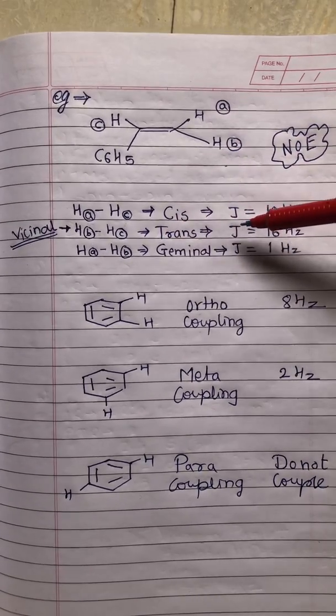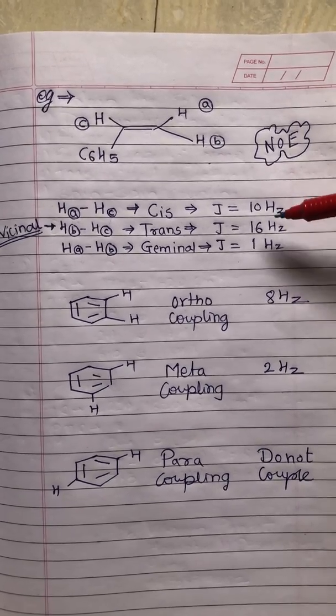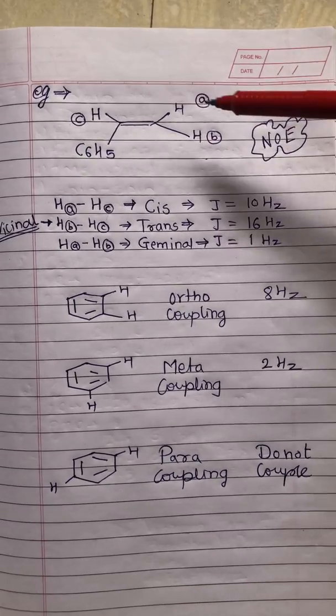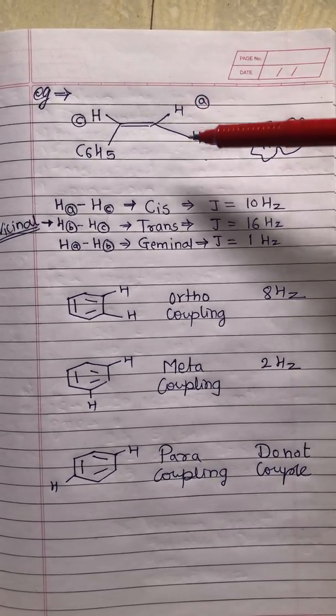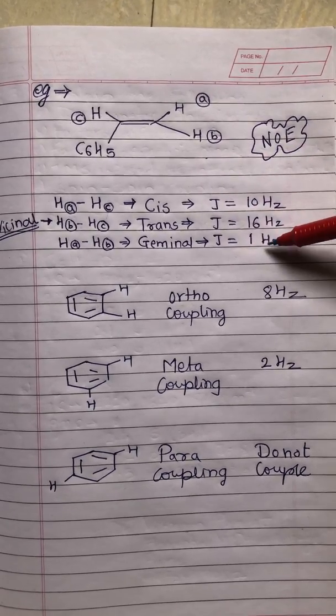If any proton is given with 16 Hertz value in a problem, you can easily identify that trans protons or an alkene system is present. Ha and Hb present on the same carbon are geminal, and their value is 1 Hertz.